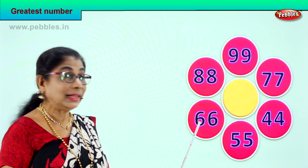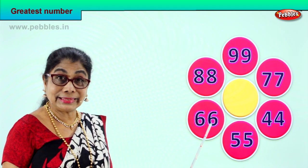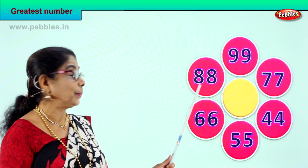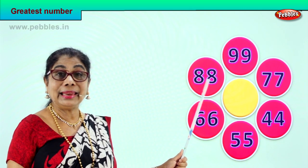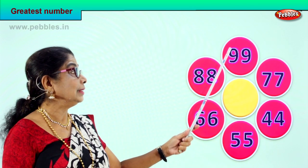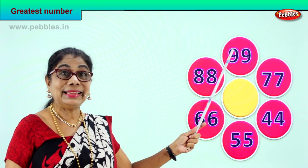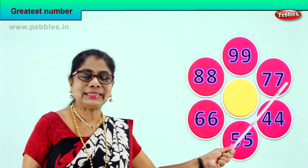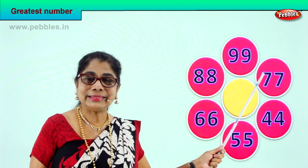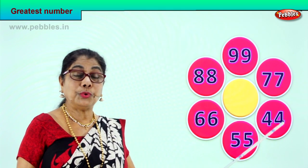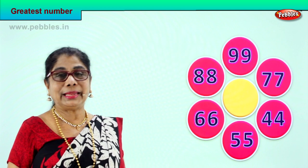Good. 66 — 6 tens. That's good. 88 — 8 tens. Good. 99 — how many tens? 9 tens. Good. 77 — 7 tens. 44 — 4 tens.